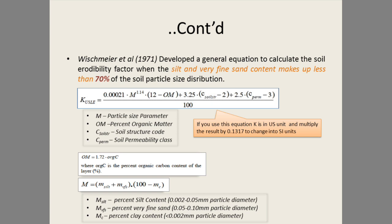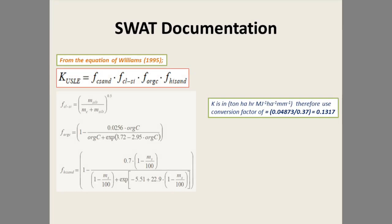If you use this equation, K is in US units and you need to multiply the result by 0.1317 to convert to SI units. Percent organic matter is also related to organic carbon content using the equation: percent organic matter = 1.72 × organic carbon content. The parameter M equals (percent silt + percent very fine sand) × (100 − percent clay). In most cases, percent very fine sand is approximately zero, so we take percent silt for M.